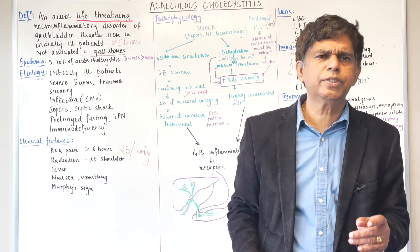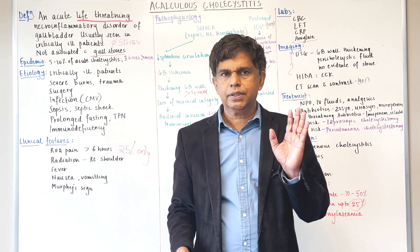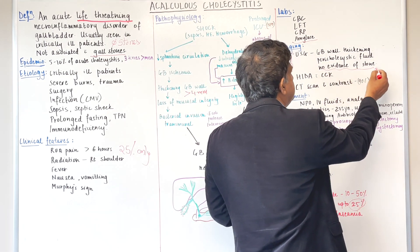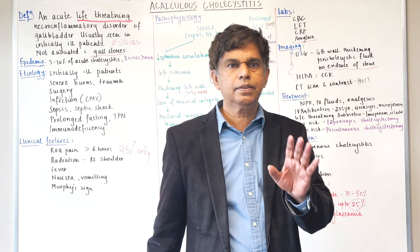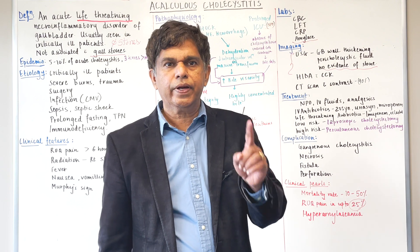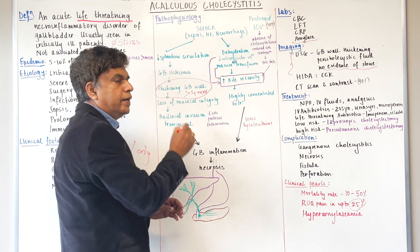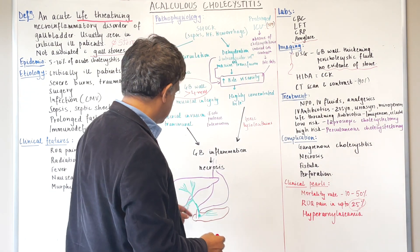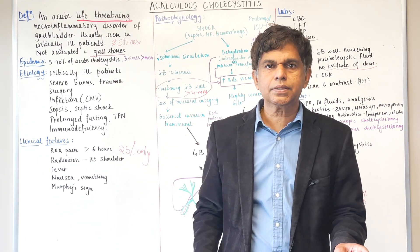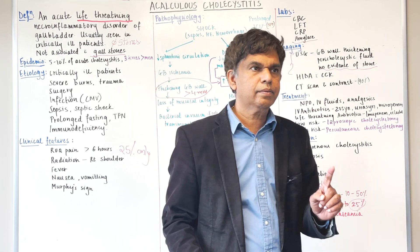For imaging, ultrasound is the number one modality, with sensitivity and specificity of about 93–95%. You will not find stones, but you're looking for gallbladder wall thickening greater than 4 millimeters and pericholecystic fluid. These are the characteristic findings on gallbladder ultrasound.